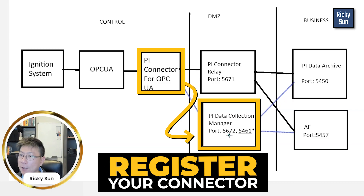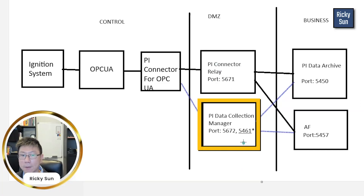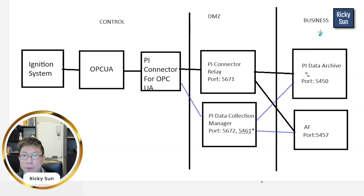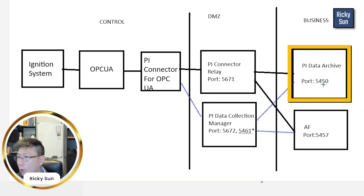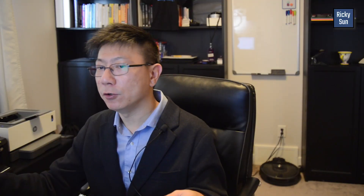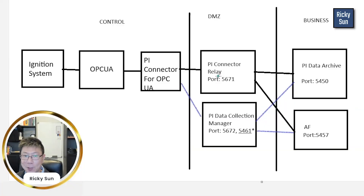I left it open and didn't ask IT to close it. This is important because you need to register your connector to the data collection manager so that the website can see it and approve. You need to do that step in order to get everything running. These three ports are necessary and they are listening when you install the connector relay and data collection manager. On the business network side, the data archive should already have port 5450 open, and 5457 for your AF server. Once you have these ports open, you can set up your graphical interface for the PI connectors.